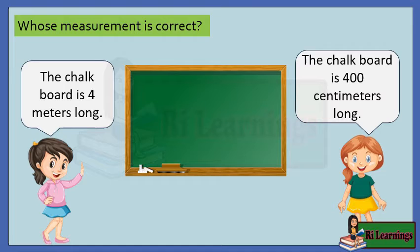Merites and Anna measured the length of a chalkboard. Merites found it to be 4 meters long, while Anna claimed that it is 400 centimeters long. Whose measurement is correct?